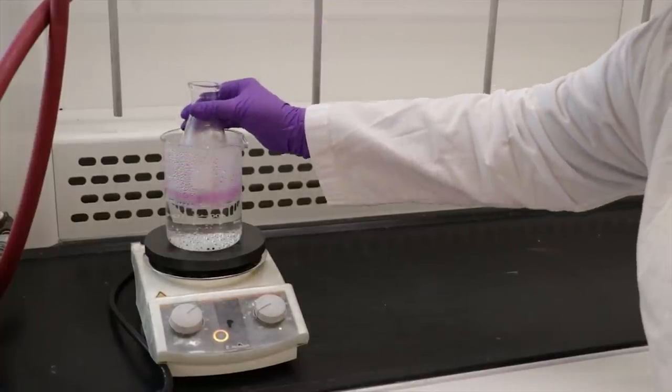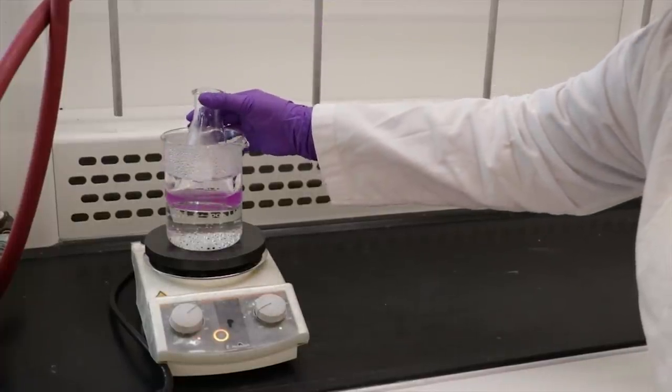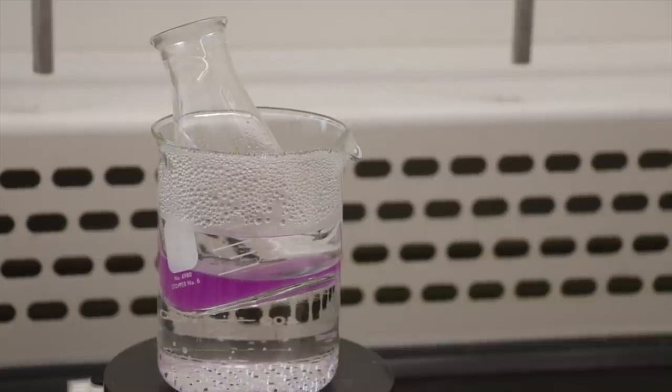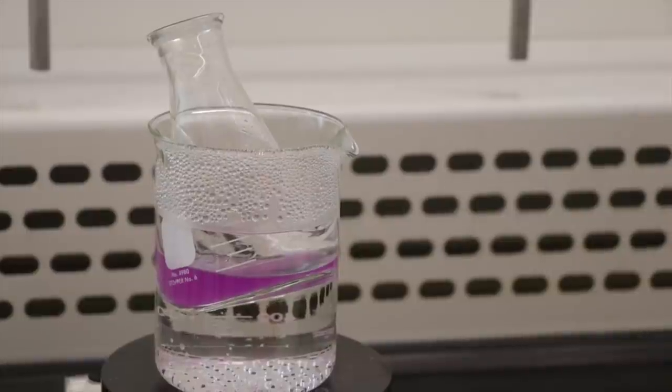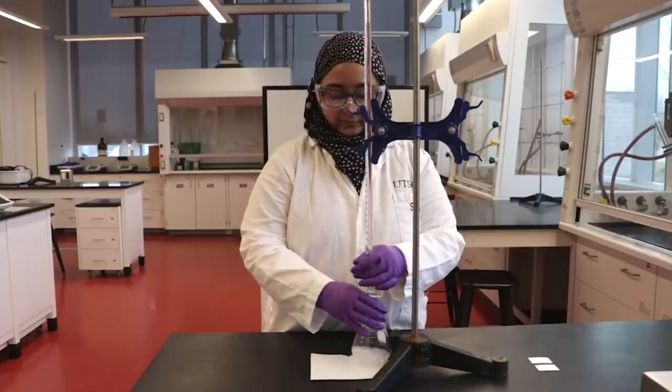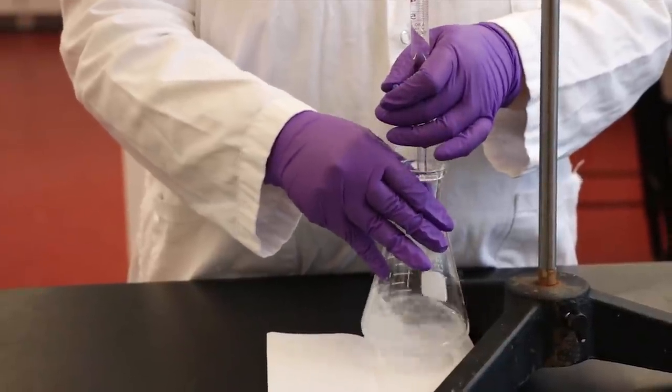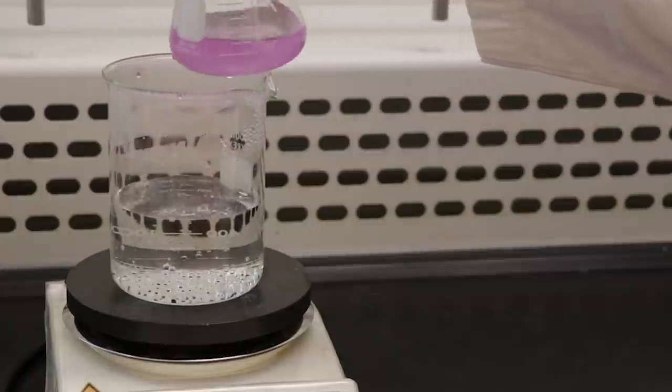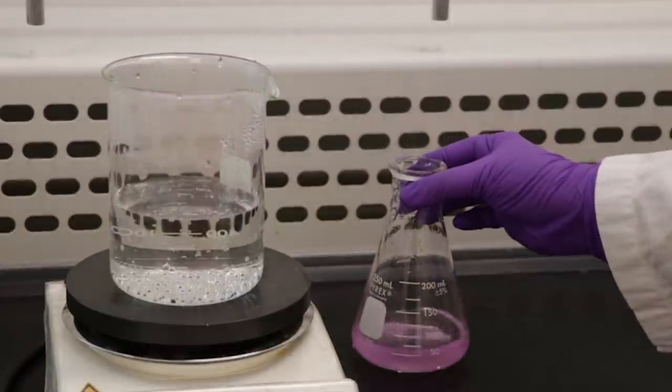Prepare a boiling water bath and heat the Erlenmeyer flask on the water bath for 15 minutes. Do not place the flask directly on the hot plate as ethanol is flammable. In the meantime, start another trial. You will be expected to complete a total of three trials. After 15 minutes, remove the flask from the water bath and allow the solution to cool to room temperature.